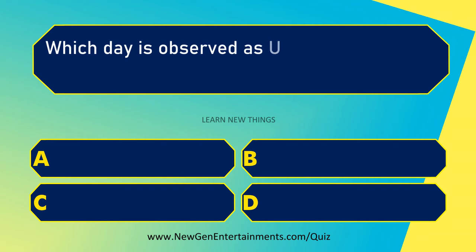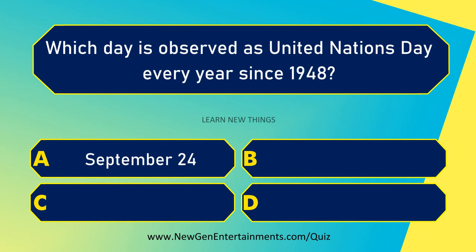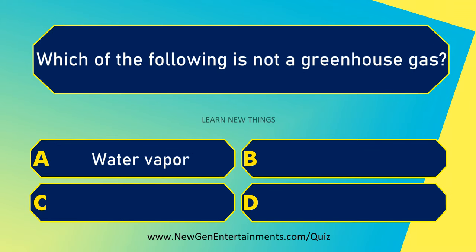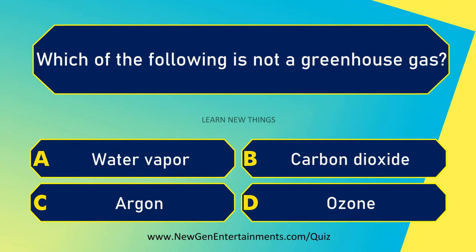Which day is observed as United Nations Day every year since 1948? October 24. Which of the following is not a greenhouse gas? Argon.